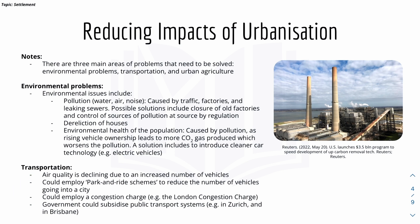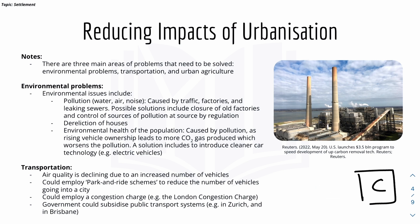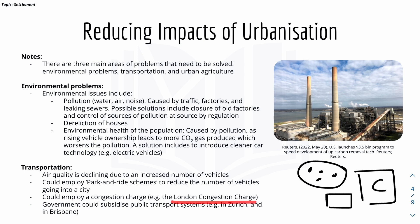For transportation, air quality is declining due to an increased number of vehicles in urban areas. A solution is to employ park and ride schemes — instead of all cars going into the city, there could be a parking area outside the city where cars park, and a bus fetches everyone from that area into the city. They could also employ a congestion charge, like London's Congestion Charge. Additionally, the government could subsidize public transport systems.